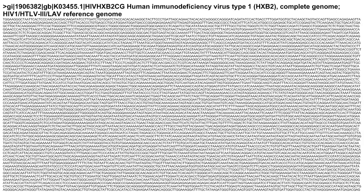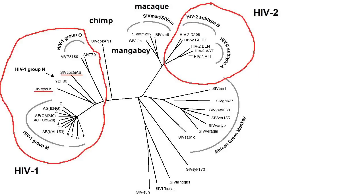Where could HIV have come from? We sequenced the genome of thousands of strains of HIV, and while there was an incredible diversity of sequences at certain locations, they all had a strong homology to various SIV strains. We usually break up the strains of HIV into two main groups, the HIV-1 and HIV-2 species.